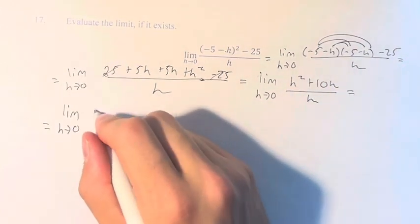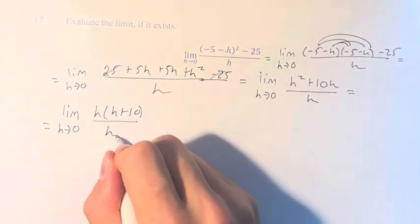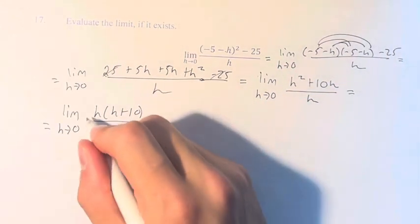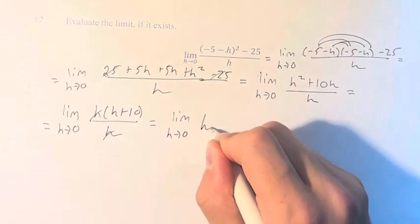h² + 10h is h times (h + 10), factoring out an h from both of these terms, divided by h. Canceling the h's out, we have the limit as h approaches 0 of h + 10.